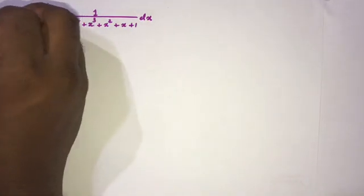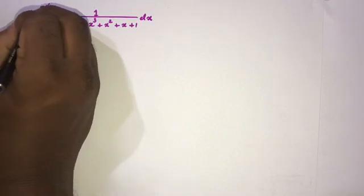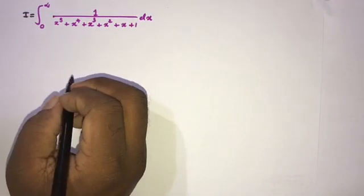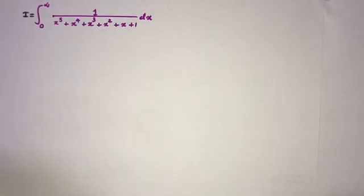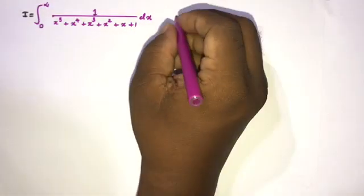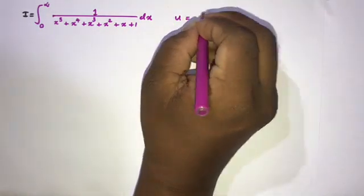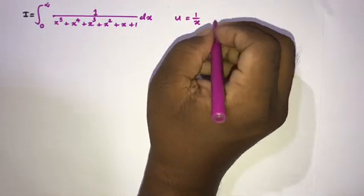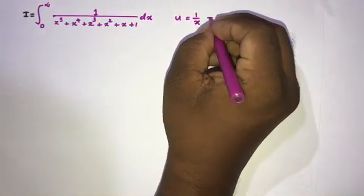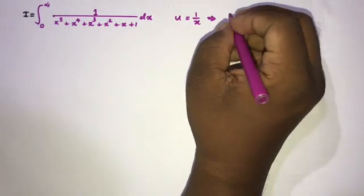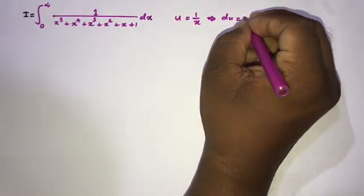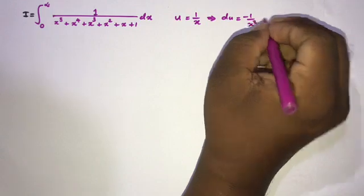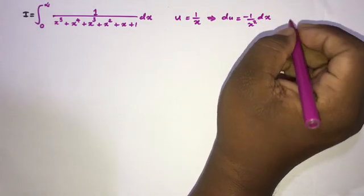I am going to call our integral I, and then take a substitution. If we let u equal 1 over x, and differentiate, we get du equal to minus 1 over x squared dx.